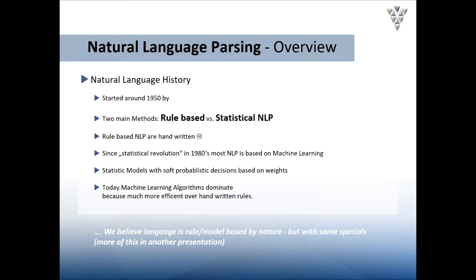Neural networks have certain problems: you cannot really understand what the decision basis of these networks is, and interpreting a sentence is in a way unsharp and more guessing. The problem of sharpness and the lack of explicit resolution of meaning is a significant issue. We believe that language has a true rule-model-based core by nature.